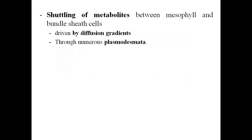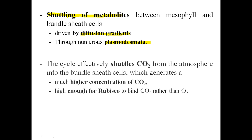The shuttling of metabolites between mesophyll and bundle sheath cells is driven by diffusion gradient through numerous plasmodesmata. The cycle shuttles carbon dioxide from the atmosphere into the bundle sheath cells, where it generates a higher concentration of carbon dioxide. This higher CO2 concentration is sufficient for RuBisCO enzyme to bind carbon dioxide rather than atmospheric oxygen.